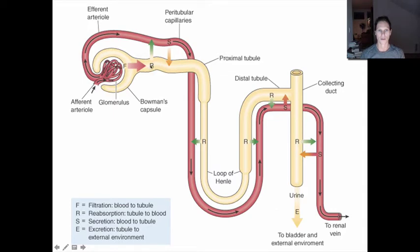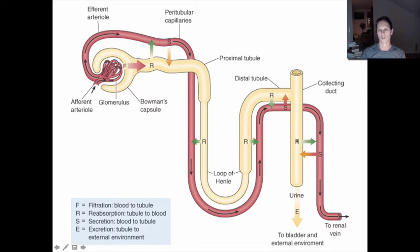Reabsorption is the transport of anything dissolved in the filtrate back into the blood. In the proximal tubule, about 100% of our nutrients get reabsorbed — from the tube back into the peritubular capillaries. We reabsorb water from the descending limb of the loop of Henle into the vasa recta, certain ions in the loop, sodium in the distal tubule, and primarily water in the collecting duct.